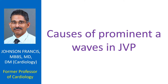What are the causes of prominent A waves in JVP? A prominent A wave in jugular venous pulse indicates a resistance to right ventricular filling, which may be due to RV hypertrophy or RV inflow obstruction.